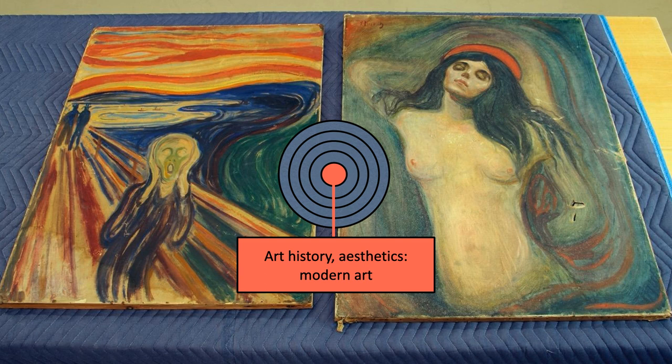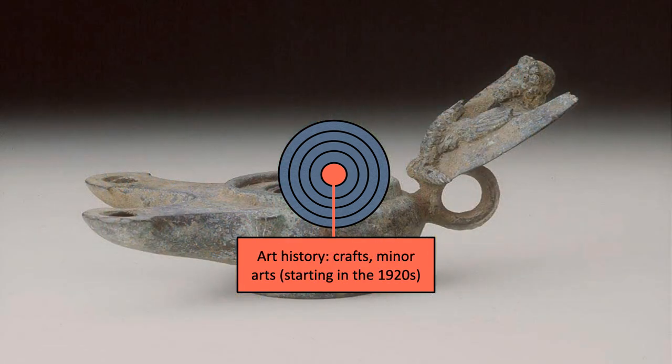That's a photograph of the two Munch paintings as they were retrieved after they had been stolen — and you can see one of them is kind of gouged. The study of art history and aesthetics would also include fields that have traditionally always studied modern and contemporary art. Starting in the 1920s, art history also started looking at crafts and minor arts — that's a Roman oil lamp — because there were scholars in Europe in the 1920s that started studying things like Roman decorative arts, rugs, and objects that hadn't been studied by art history before.